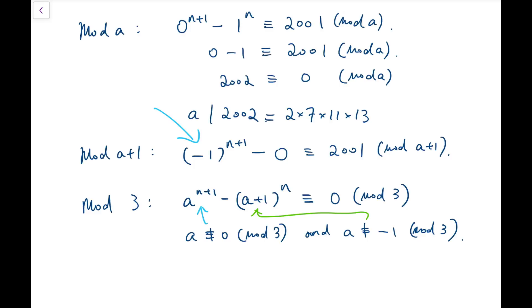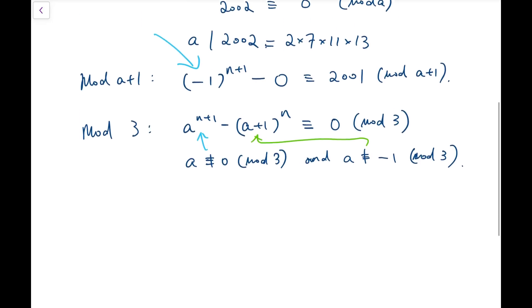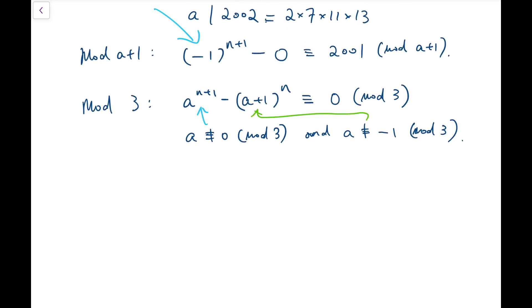And a similar thing happens when a is congruent to minus 1 mod 3. That will make the other term be a multiple of 3, but a to the n plus 1, now it's not, now then a to the power n plus 1 would not be multiple of 3. So that means there's only one possible case if I were to take a mod 3, which is that a must be congruent to 1 mod 3.